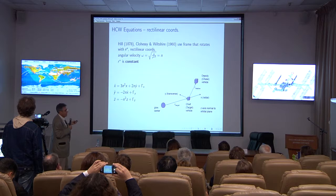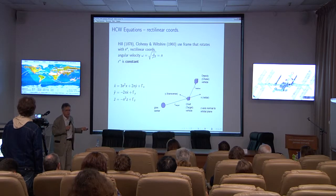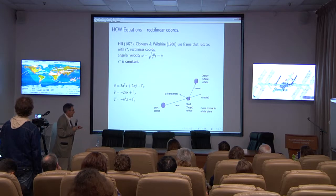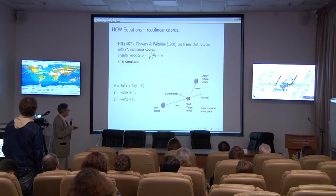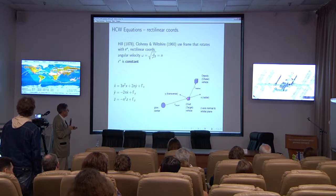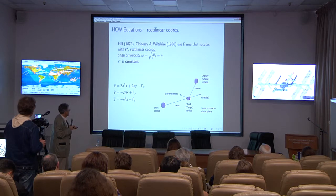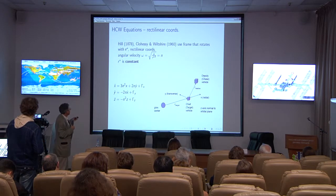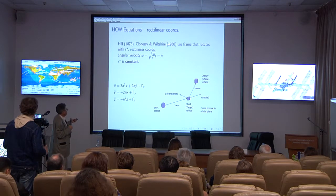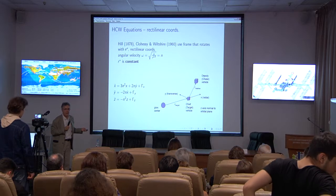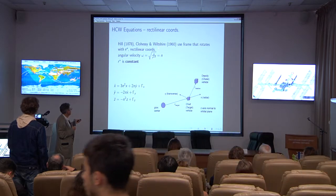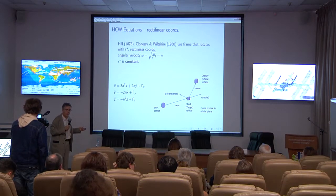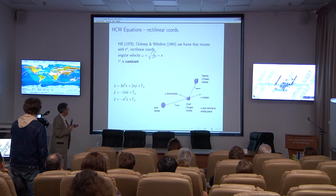Hill, an astronomer in 1878, in analyzing motion with respect to the moon, proposed writing equations using a frame of reference which is rotating with the target spacecraft. The assumption is that the target spacecraft is in a circular orbit — this is referred to as the Hill frame. In 1960, Clohessy-Wilshire published a paper that also used this frame, and Hill somehow got forgotten. So sometimes these equations are called the CW equations. More recently, they've been called the HCW or Hill-Clohessy-Wilshire equations.